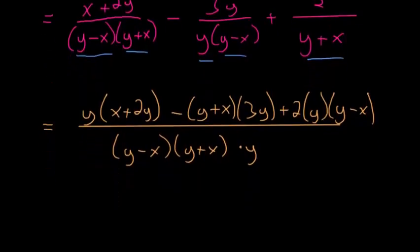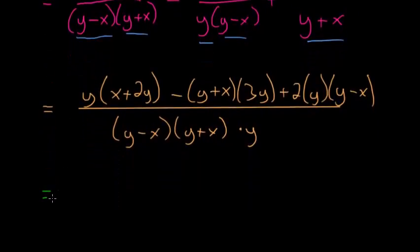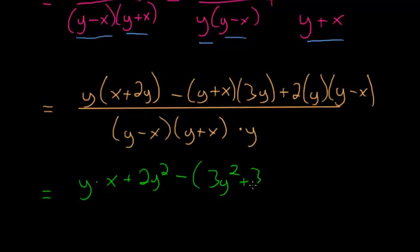So this entire expression is equal to, here we'll just distribute this y to each of these two terms. So we have y times x plus 2y squared. And then this middle set here would be a minus. And we have 3y distributed to each of these. So we have 3y squared plus 3xy.